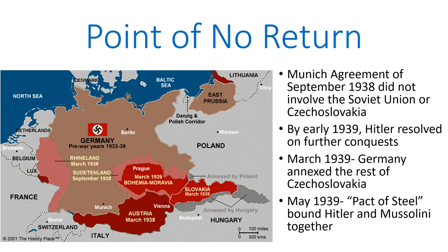One question that often gets asked — and I believe is ultimately unanswerable — is whether or not World War II was inevitable. Was there a point of no return? I'm not sure, but I think that it may have actually been quite late if there was such a point. The Munich Agreement of September 1938 did not involve the Soviet Union or Czechoslovakia. Had it involved these two countries — Czechoslovakia because it was being carved up by Germany, and the Soviet Union because with Soviet involvement this would create an actual threat to German expansion — the Munich Agreement possibly could have prevented the outbreak of World War II, at least so soon. However, having gotten what he wanted for free, Hitler decided by early 1939 that he should conquer some more.